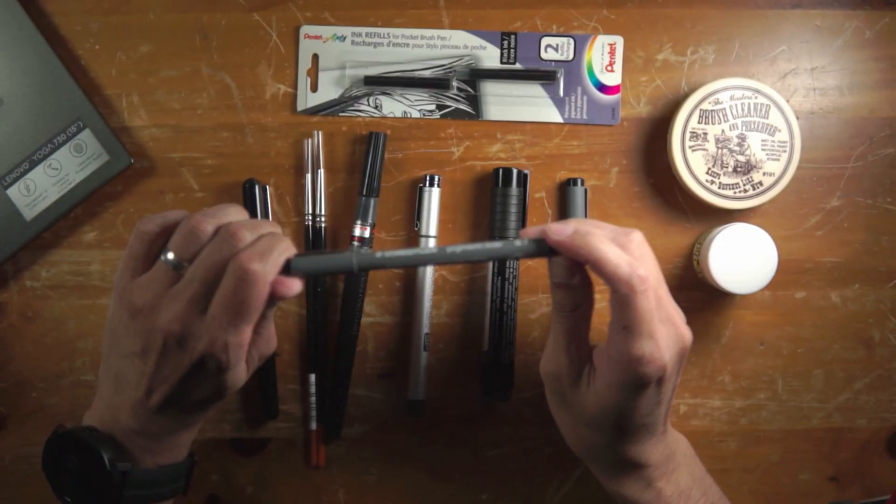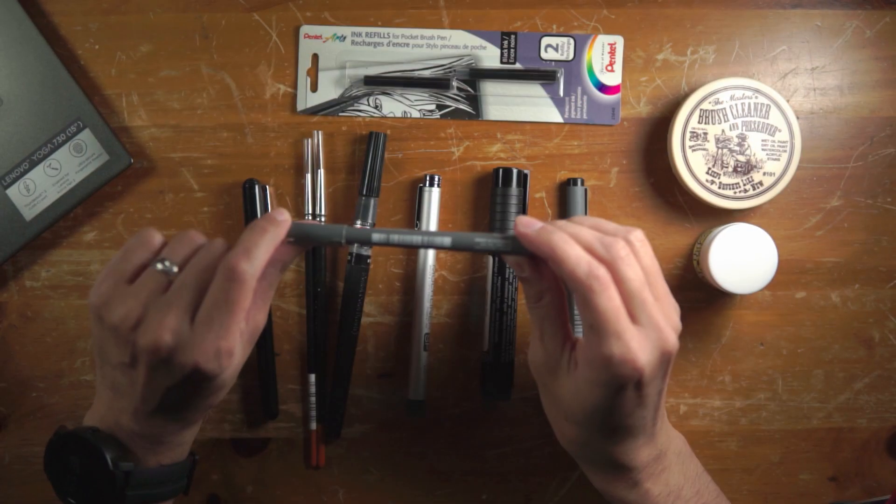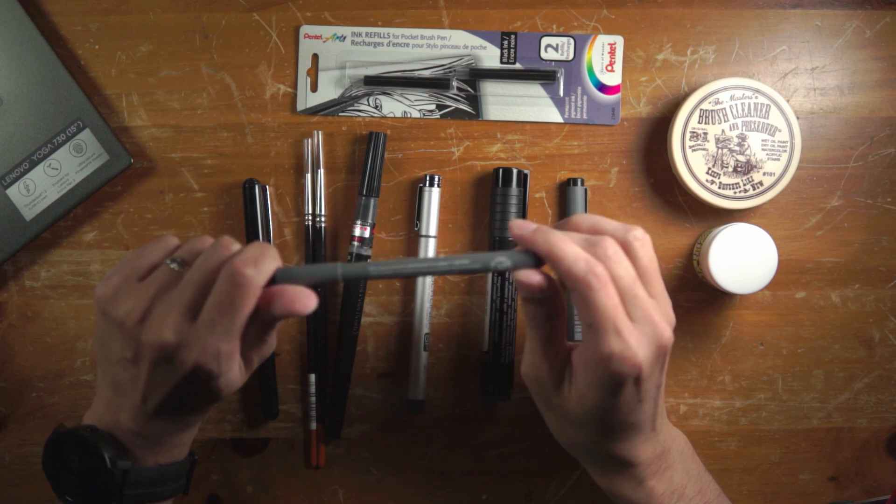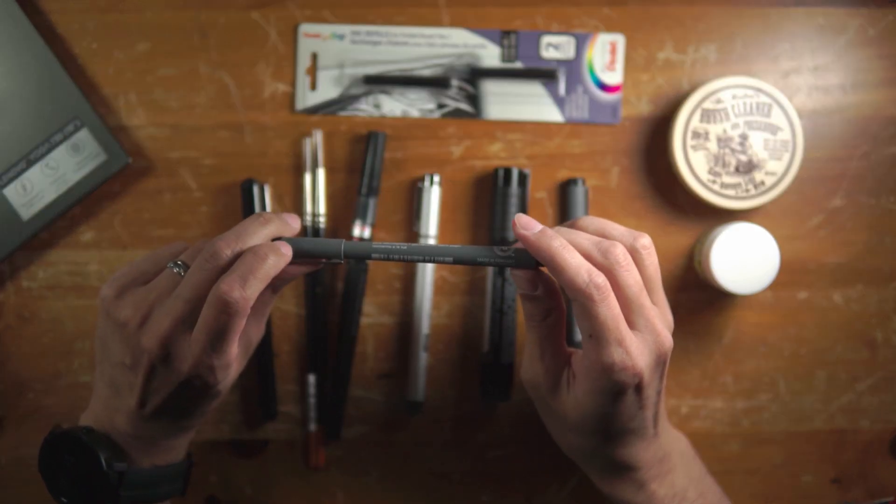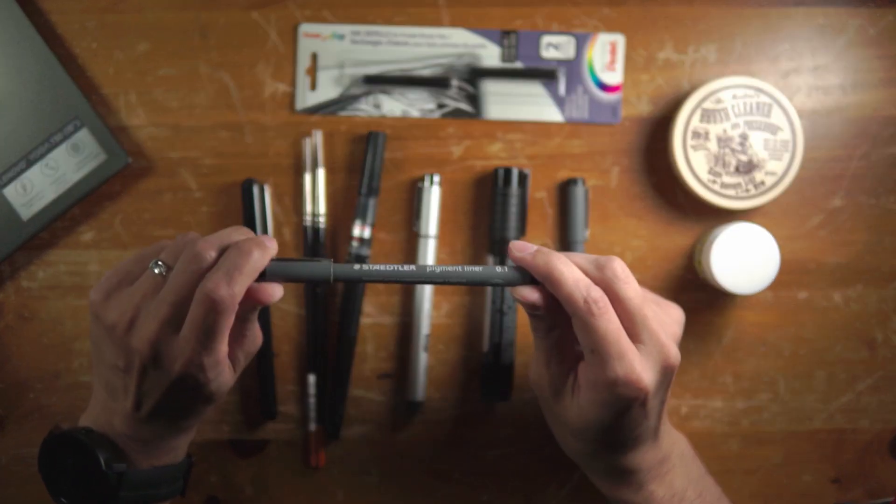So they're good for doing details. They're good for doing buildings and stuff like that where you want to keep the line consistent. That's what I use these for. If you want to do panels in comic books, these are also good for that. If you want to do anything that requires a ruler, any lines that require rulers, these are good for those.